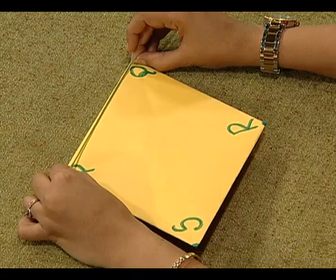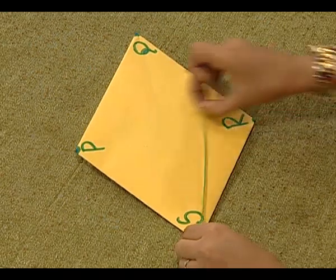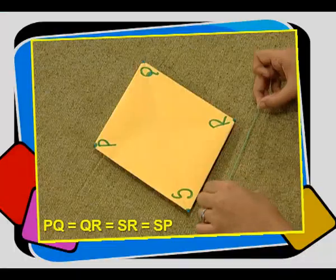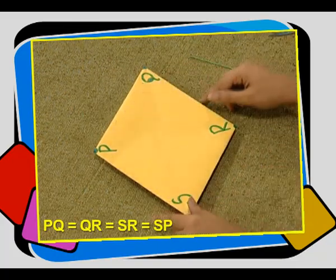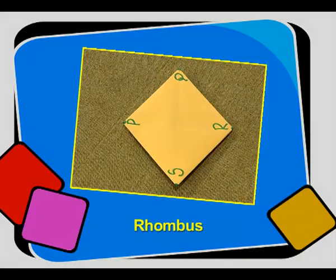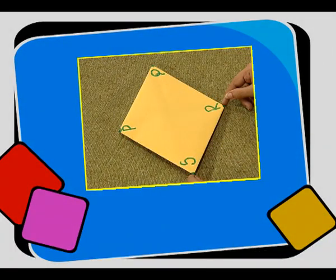So take a piece of thread equal to the length of PQ. Place it on QR, then place it on SR, and then place it on SP. As you all can see, PQ, QR, SR, and SP are all equal in length. So students, we observed that by joining the midpoints of the sides of a rectangle, we obtained a rhombus. What if, instead of taking a rectangle, we had taken a rhombus? By joining the midpoints of the sides of a rhombus, what special type of parallelogram would we obtain? Try this for yourself.